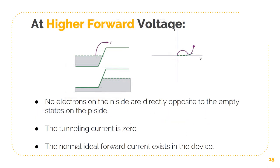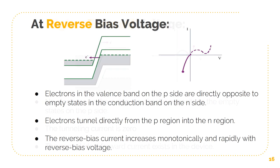At higher forward voltage, there are no electrons on the N side directly opposite to available empty states on the P side. For this forward bias voltage, the tunneling current will be zero and the normal ideal forward current exists in the device, as shown in the IV characteristics. At reverse bias voltage, electrons in the valence band on the P side are directly opposite to empty states in the conduction band on the N side, so electrons can tunnel directly from the P region into the N region, resulting in a large reverse bias tunneling current, which increases monotonically and rapidly with reverse bias voltage.